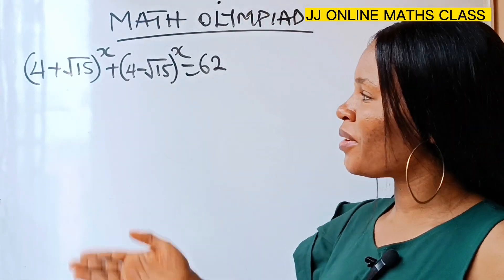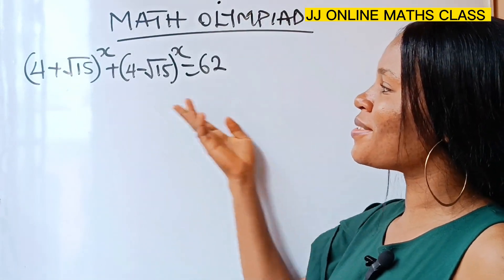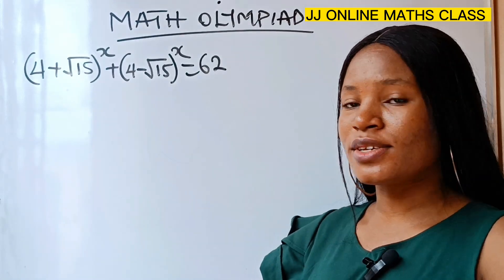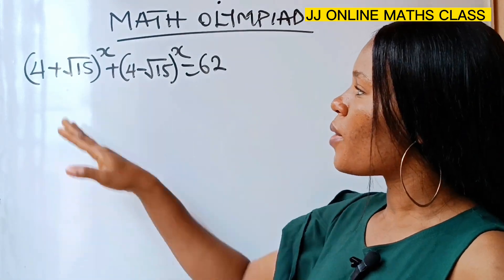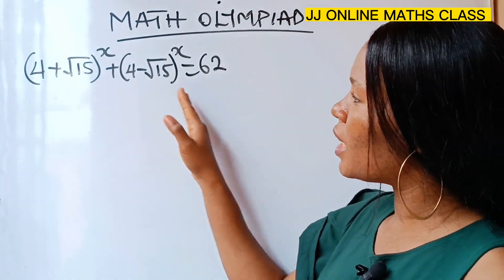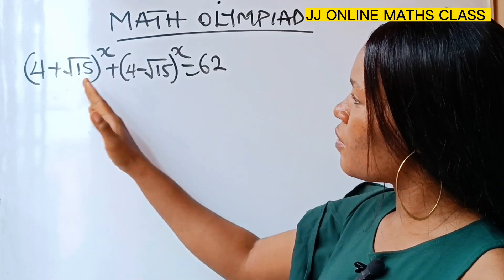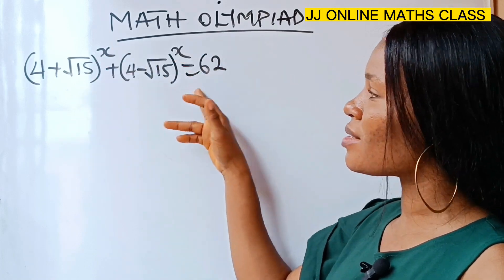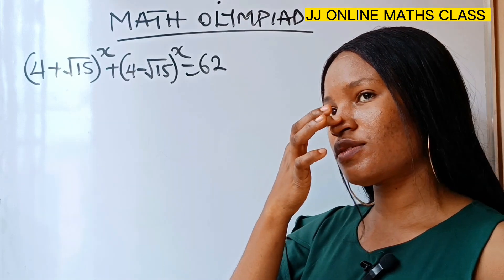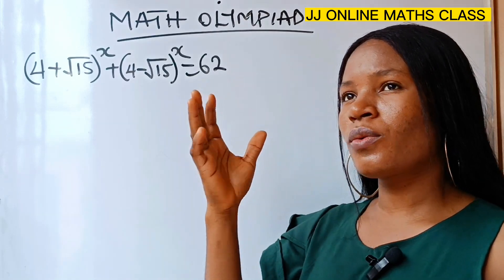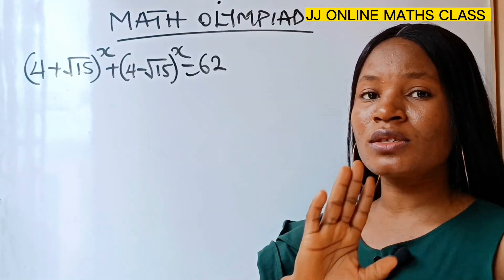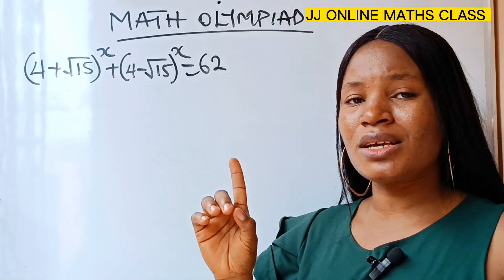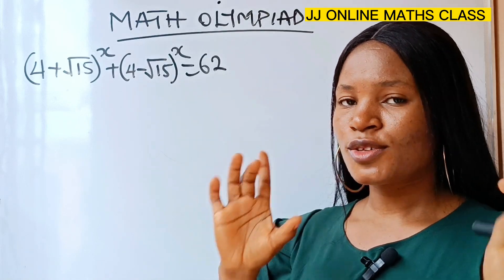Take this step by step and get to the solution. We are asked to solve this: if this ripple of x plus this ripple of x is equal to 62. When I saw this question, the first thing that came to my mind is difference of two squares.